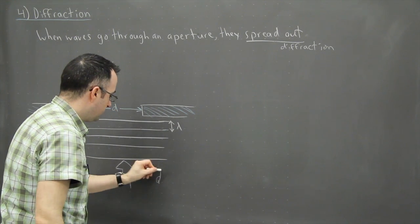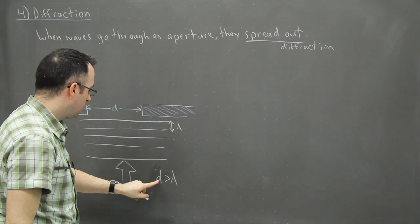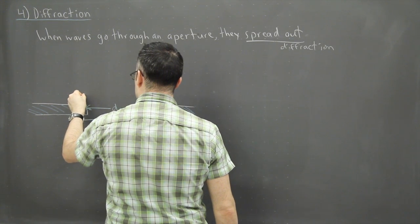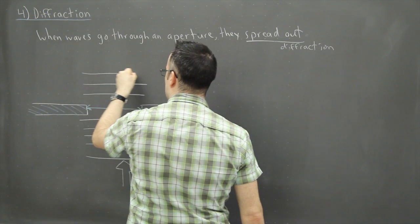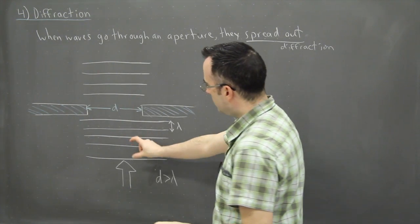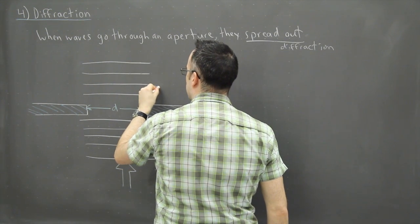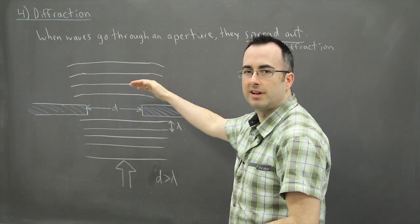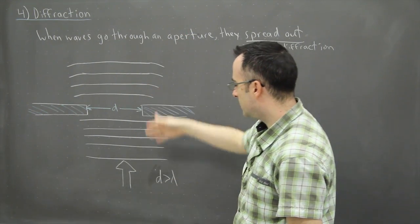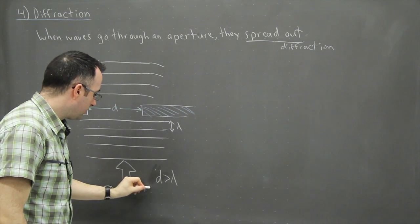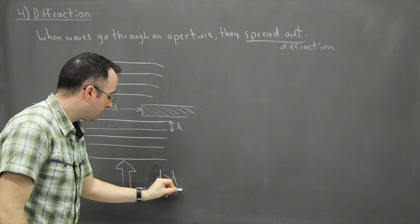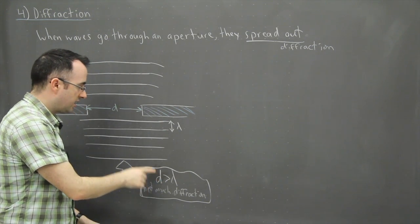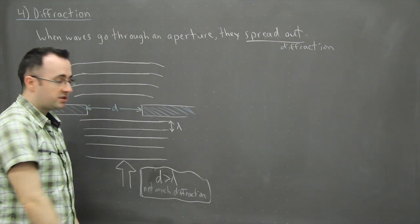If D is much greater than the wavelength, we're going to see what happens. It turns out not much happens. The waves still have the same wavelength coming through; they spread out only a little bit at the edges. So we can say: if D is much greater than lambda, there's not much diffraction. In other words, if the opening is much larger than the wavelength, the waves don't spread out much.